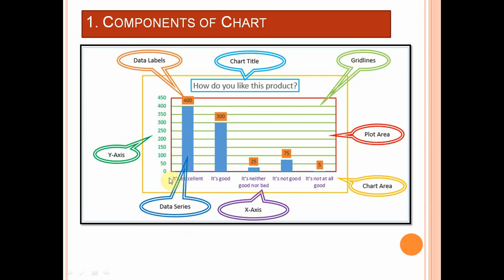A column chart is bounded by two axes. Here is the origin point. The horizontal axis is called the x-axis and the vertical axis is called the y-axis. The other name for the x-axis is category axis, and the other name for the y-axis is value axis. This is because we plot the categories on the x-axis and we plot the values for those categories on the y-axis.